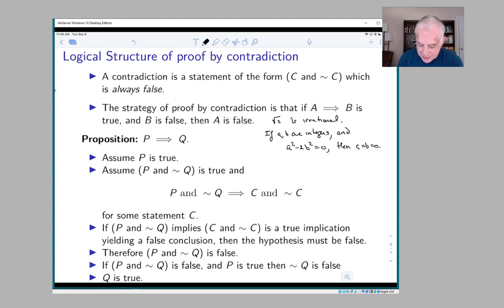Where b was not 0. So if the only way you can have a squared minus 2b squared equals 0 is if b is equal to 0, that's the same as saying that the square root of 2 is irrational.